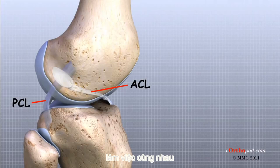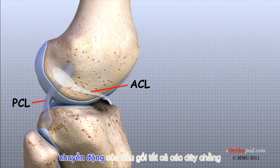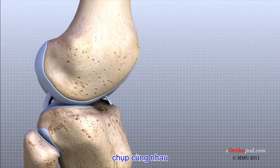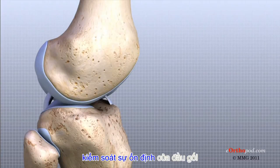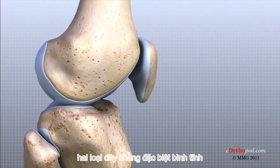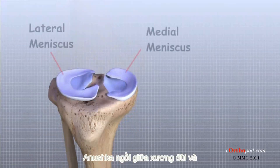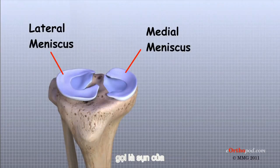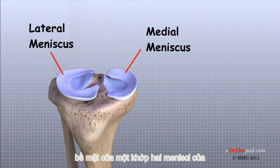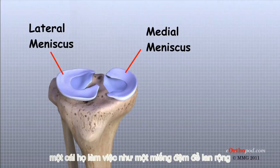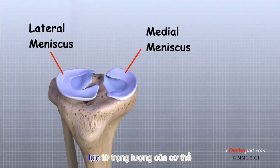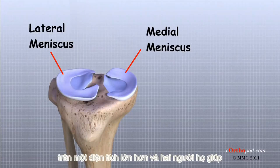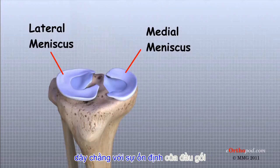Working together, the two cruciate ligaments control the back-and-forth motion of the knee. The ligaments, all taken together, are the most important structures controlling the stability of the knee. Two special types of ligaments, called menisci, sit between the femur and the tibia. These structures are sometimes referred to as the cartilages of the knee, but the menisci differ from the articular cartilage that covers the surface of the joint. The two menisci are important for two reasons: they work like a gasket to spread the force from the weight of the body over a larger area, and they help the ligaments with stability of the knee.